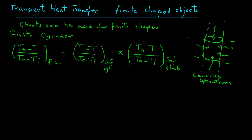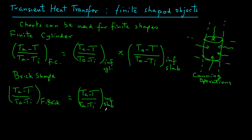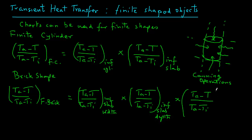There is another brick shape that we can also consider using these charts and the equation is as follows. A temperature ratio, (TA minus T) over (TA minus TI) for a finite brick shape equals temperature ratio, (TA minus T) over (TA minus TI) for infinite slab when the width is taken as the fixed dimension, times the temperature ratio (TA minus T) over (TA minus TI) for infinite slab when the depth is taken as the fixed dimension, times (TA minus T) over (TA minus TI) for infinite slab when the height of that slab is taken as the finite dimension.